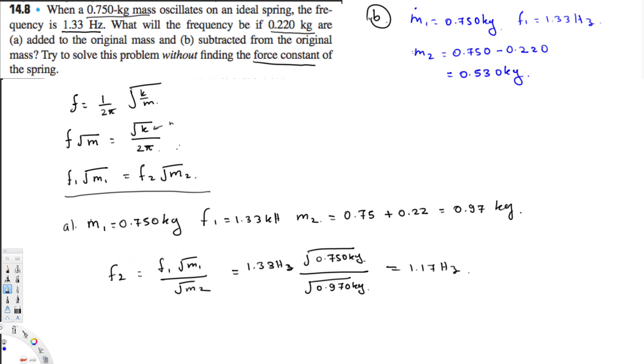Now we can use the same formula. We've already derived the formula: f₂ equals f₁ times square root of m₁ over m₂. That equals 1.33 times square root of 0.750 divided by square root of 0.530, and that gives us 1.58 Hertz. That is the final